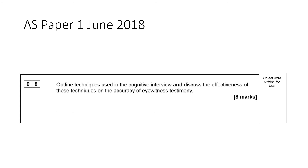Looking at past papers, there's a question from AS Paper 1, June 2018: 'Outline techniques used in the cognitive interview and discuss the effects of these techniques on the accuracy of eyewitness testimony.' This is a four and four split — four marks for AO1 and four marks for AO3. Many students were tricked by this style of question. You must outline the techniques for AO1 and then discuss effectiveness for AO3 evaluation.